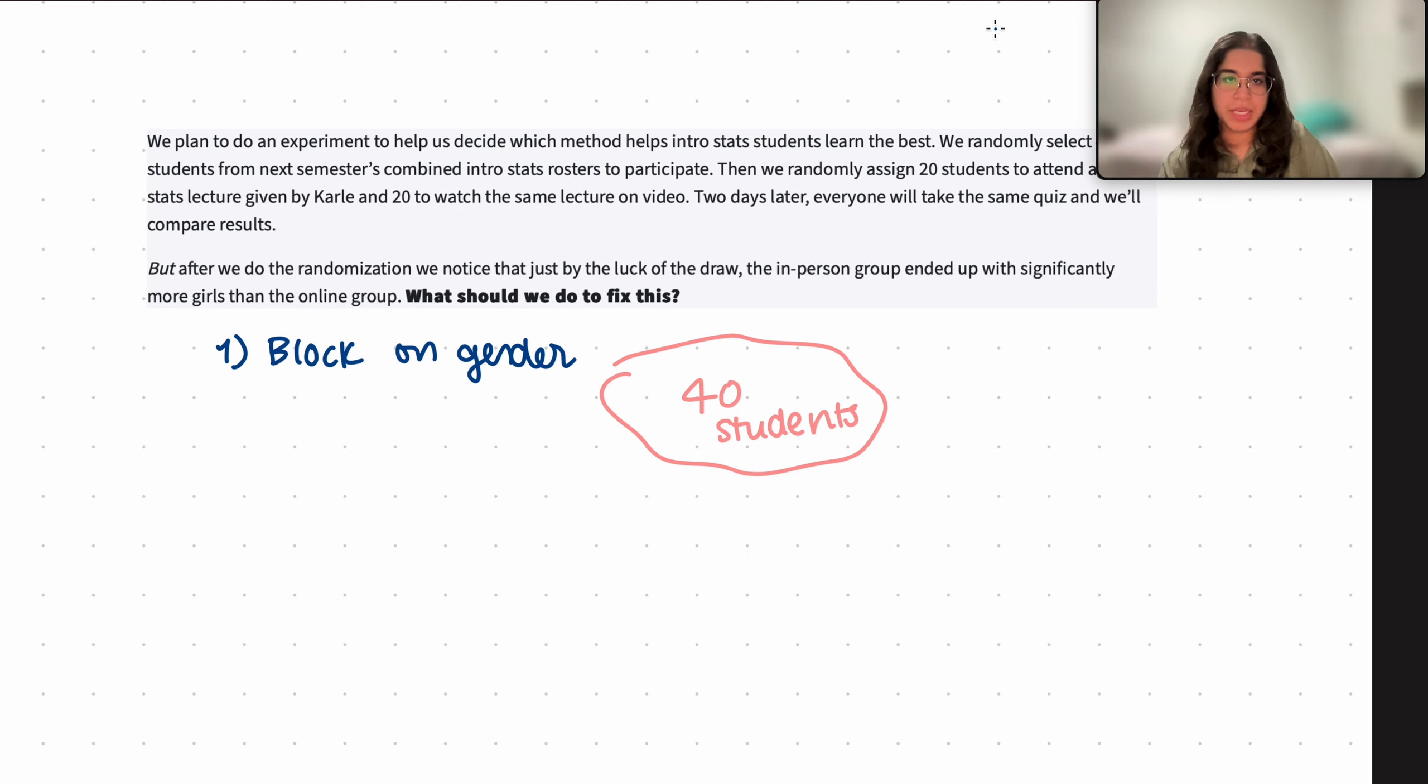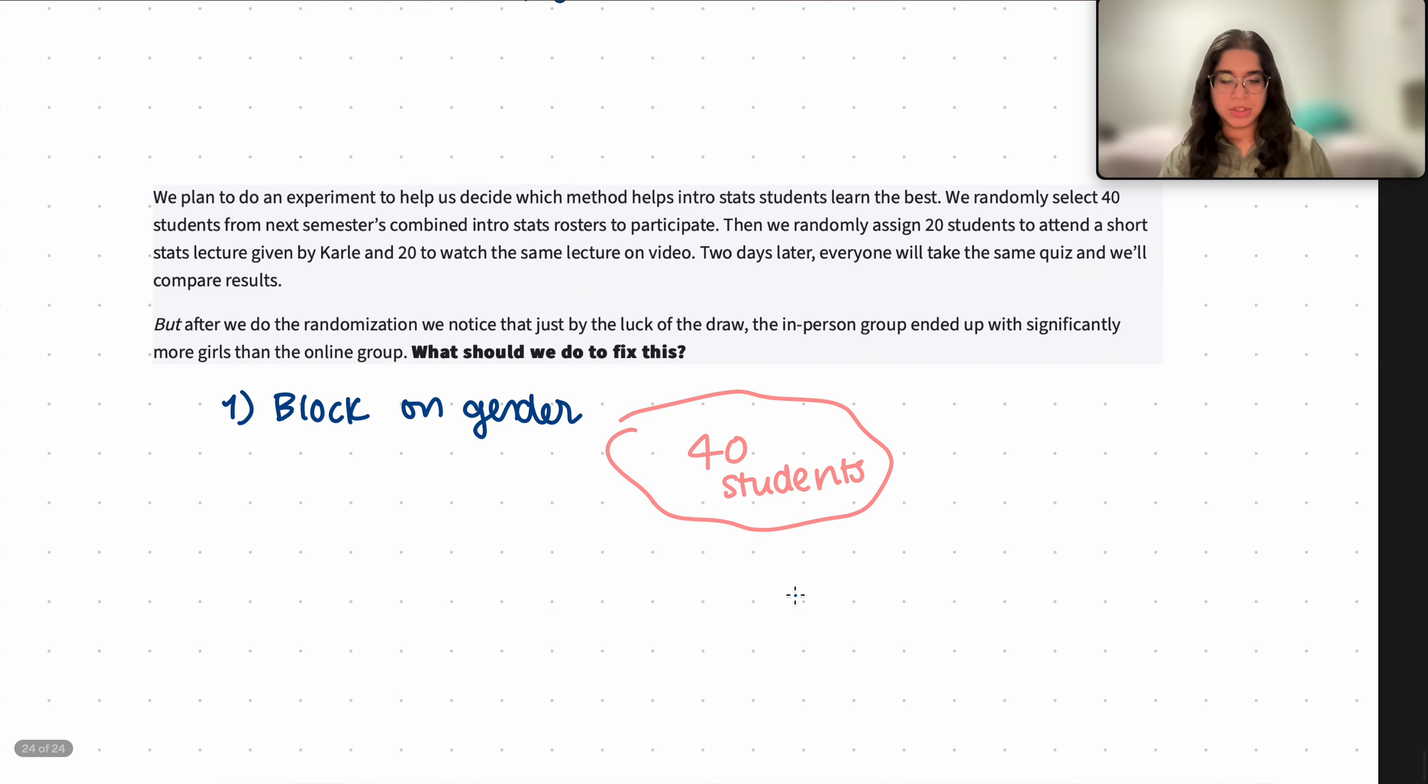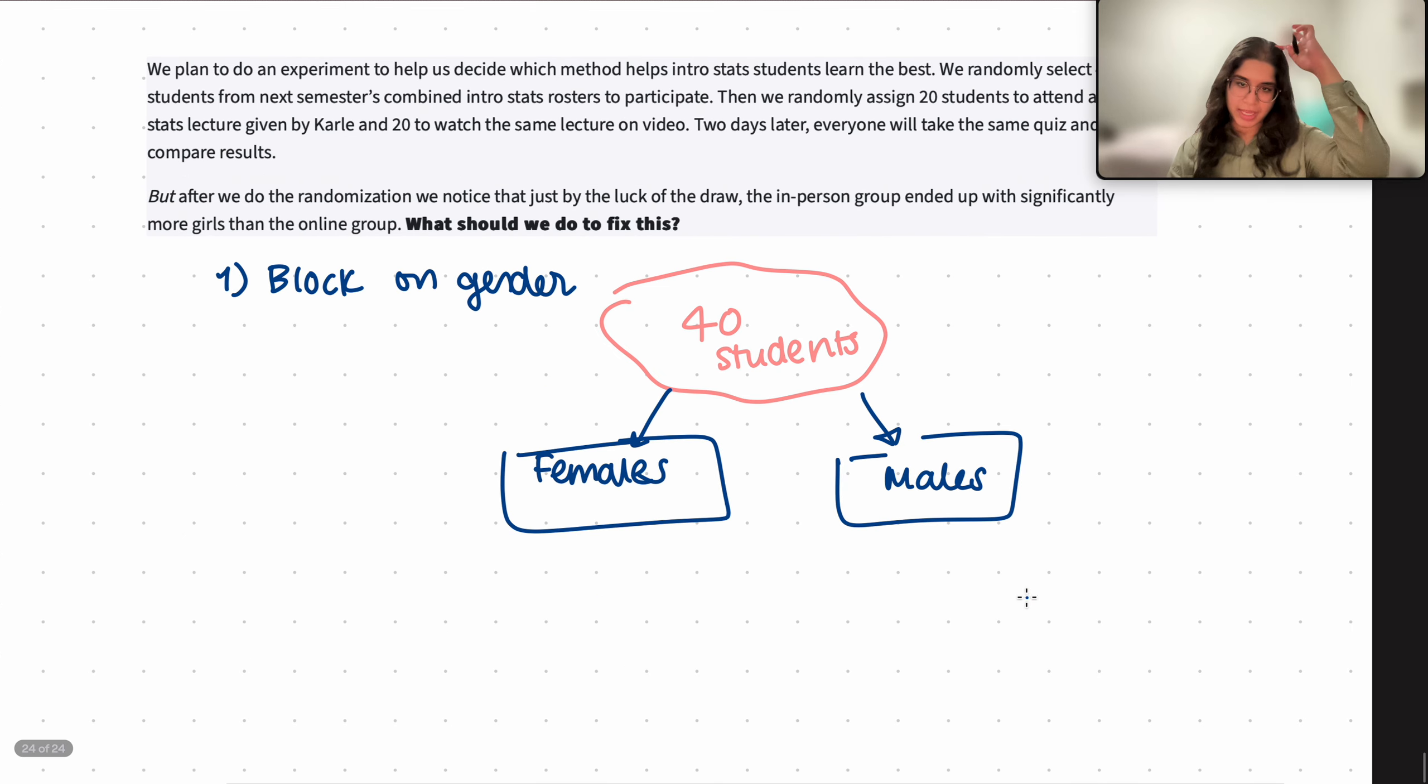If you have, for example, let this represent our 40 students. What we want to do here for blocking is basically divide that 40 students. We have randomly selected 40 students, we want to divide 40 students based on gender. So let's say we just divide based on females, that's going to be one group, and then males is another group.